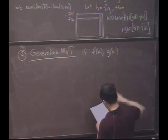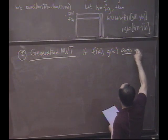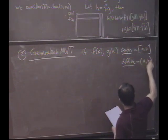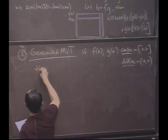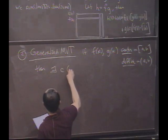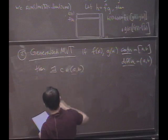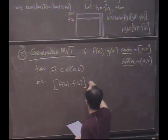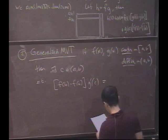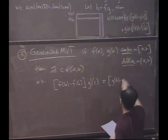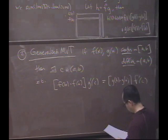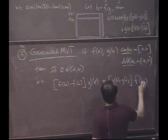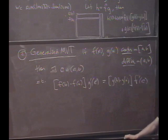If f of x and g of x are continuous on the closed interval and differentiable on the open interval, then there exists a point in between, let's call it c, so that what? f of b minus f of a times g prime of c equals g of b minus g of a times f prime of c.